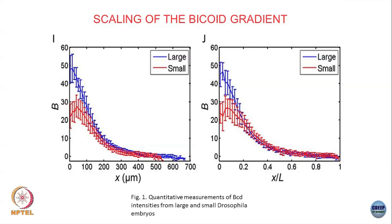So this bicoid gradient forms an exponential gradient, which we sort of understand in this context. It scales with the embryo length, which we do not understand how it does that. But this is the first step in the developmental cascade - you get this bicoid gradient, the gradient profile of this bicoid protein.